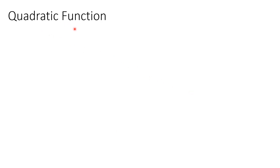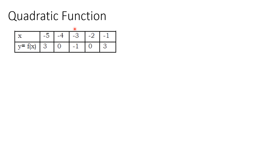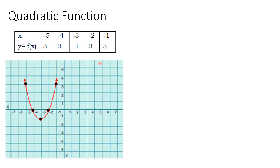Now, a quadratic function cannot only be expressed as an equation. Sometimes it can be shown as a table of values. How do we know if a given table of values is a quadratic function? The easiest way is to see its graph. I have here the graph of this table of values. As you can see, negative 5 and 3 will be plotted here — that is the first point.